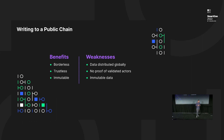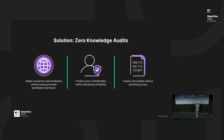One key reason zero-knowledge proofs are so critical here: there are a lot of weaknesses when writing to a public chain. Personally identifiable information cannot be written to chain for various government regulations. As regulated institutions, you want to be able to obscure that data and make it algorithmically verifiable through zero-knowledge proofs. This maintains privacy for proof of transactions and investment compositions — you don't want those to be public, since people can game your portfolio and push against your lack of liquidity, as we saw happen with Terra Luna.